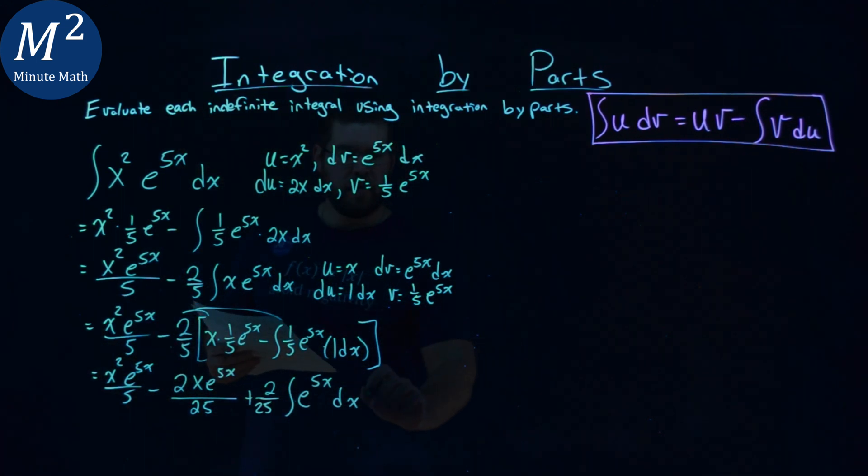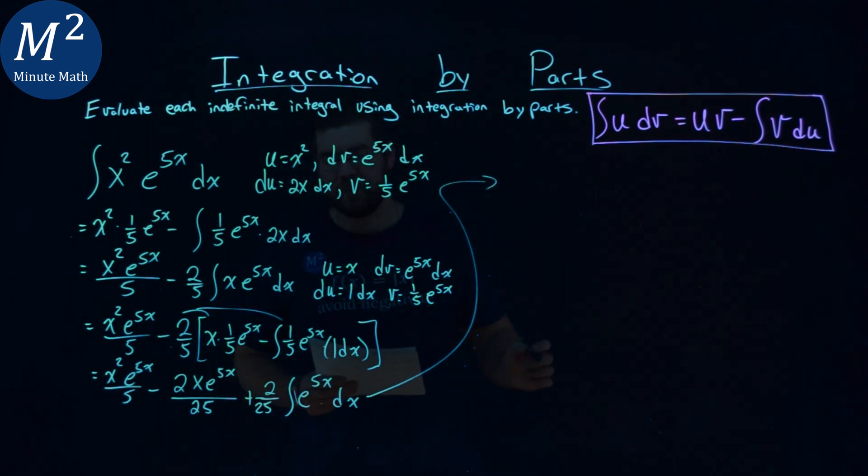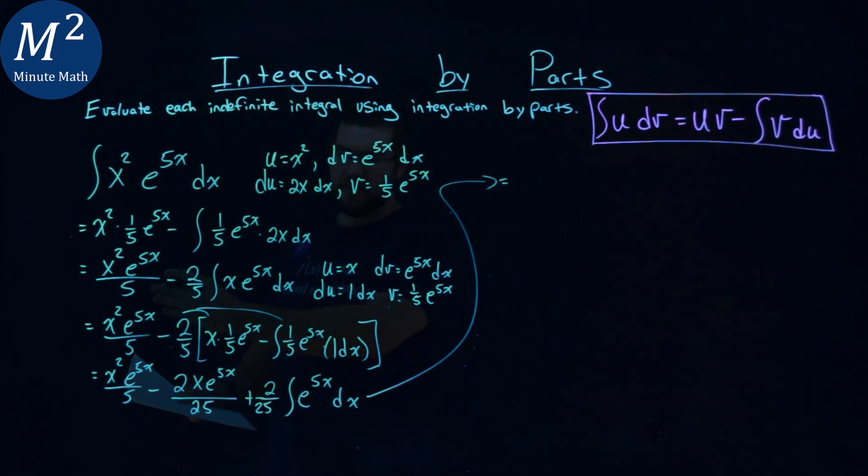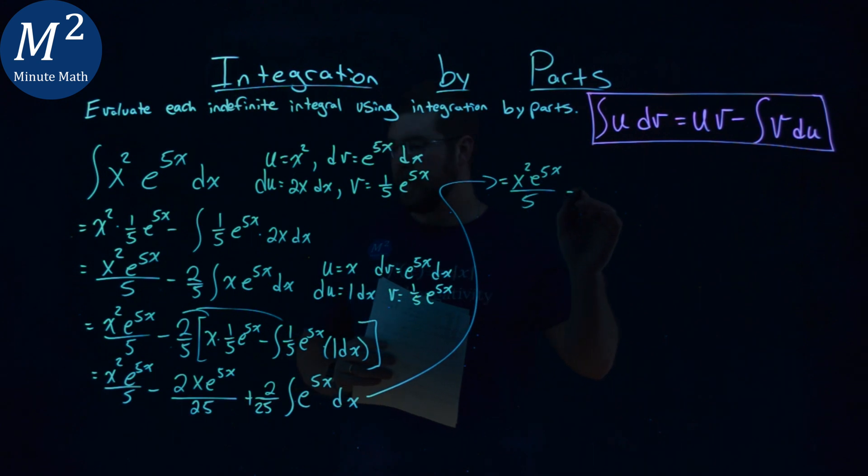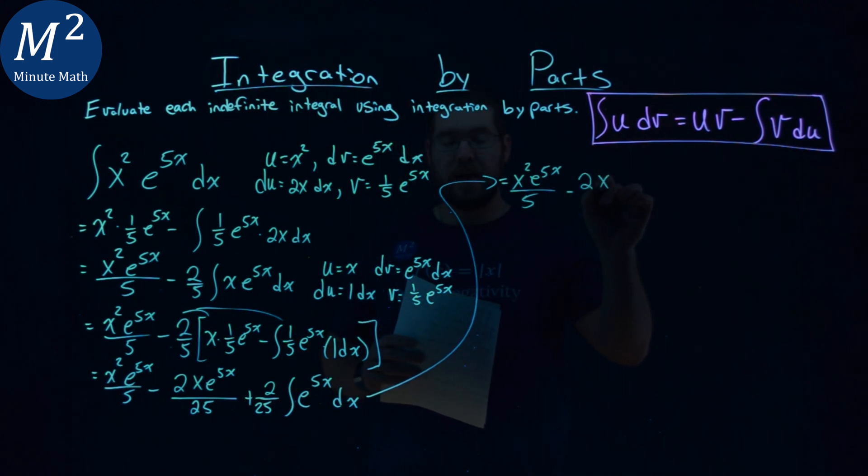Alright, let's continue. Again, the first part stays the same - you always have to keep writing it: x squared e to the 5x over 5 minus 2x e to the 5x over 25,